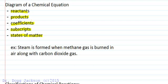Let's look at what they look like given this example of a combustion reaction. Steam is formed when methane gas is burned in air along with carbon dioxide gas. So reactants, what are we doing? We're burning methane gas in air. So methane, we learned from our hydrocarbon naming rules, is CH4. One carbon, then 2n plus 2 hydrogens is 2 times 1 plus 2 is 4. So methane gas.